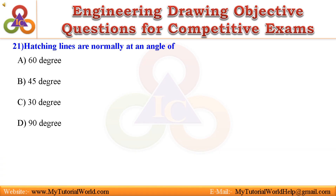Question 21. Hatching lines are normally at an angle of: A. 60 degrees, B. 45 degrees, C. 30 degrees, D. 90 degrees. Answer is 45 degrees.